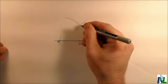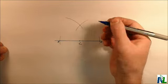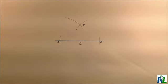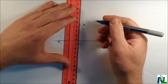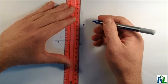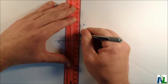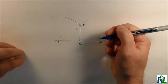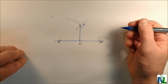These two arcs intersect right here. I'll call that point D. And now using my ruler, I'm going to join D and C. And DC is going to be perpendicular to AB.